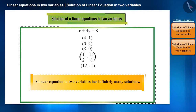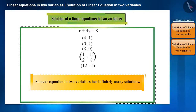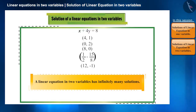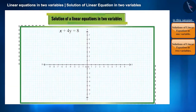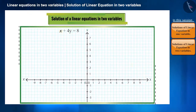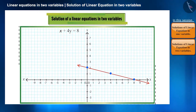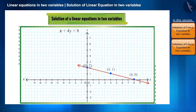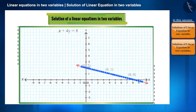There is no limit to the solutions to these equations. Therefore, we can say that a linear equation in two variables has infinitely many solutions. Why are there so many solutions? A linear equation in two variables has two variables x and y, and this gives us a line. Every point on that line is a solution to that equation, and a line is made up of infinitely many points.